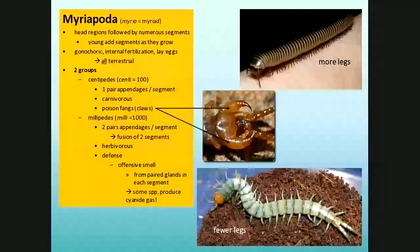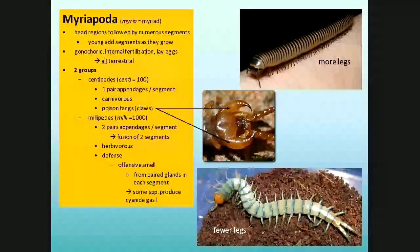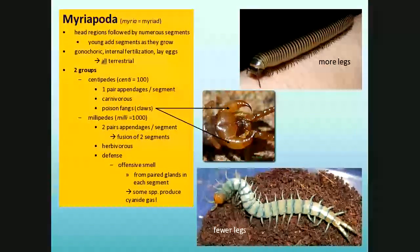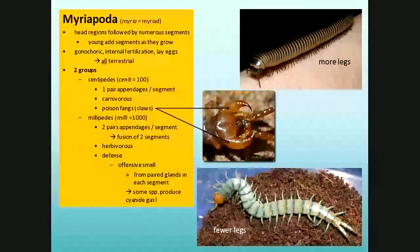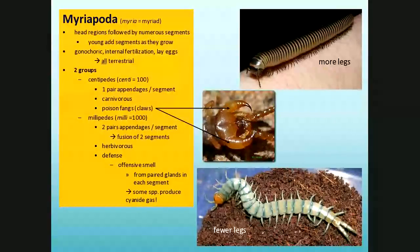Millipedes are usually not a problem — they tend to be herbivorous and defend themselves by smelling bad. Some even produce a type of cyanide gas to deter predators. Centipedes are a bit different — they're carnivorous and have poisonous fangs or claws. The one shown below is a Florida centipede.